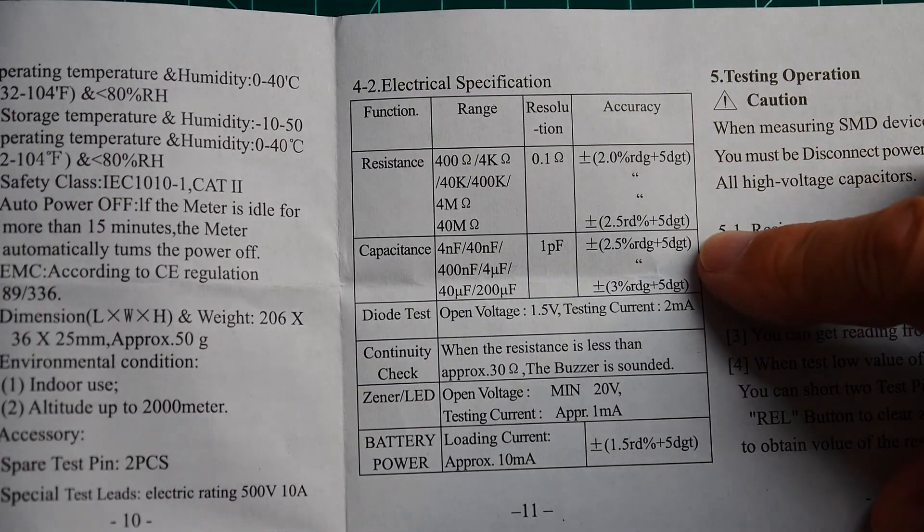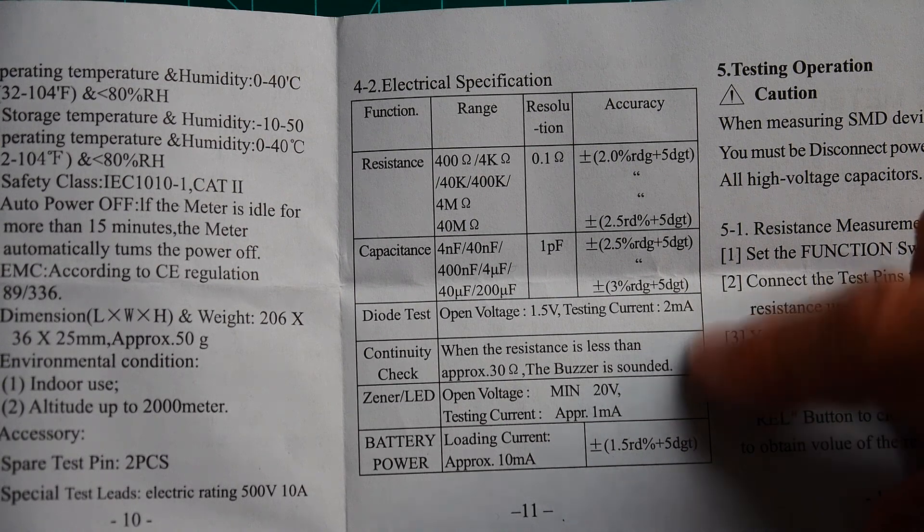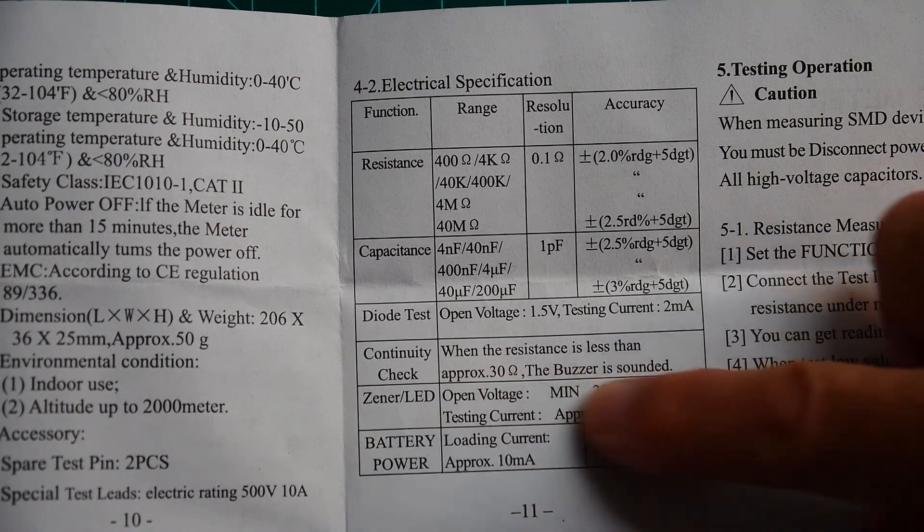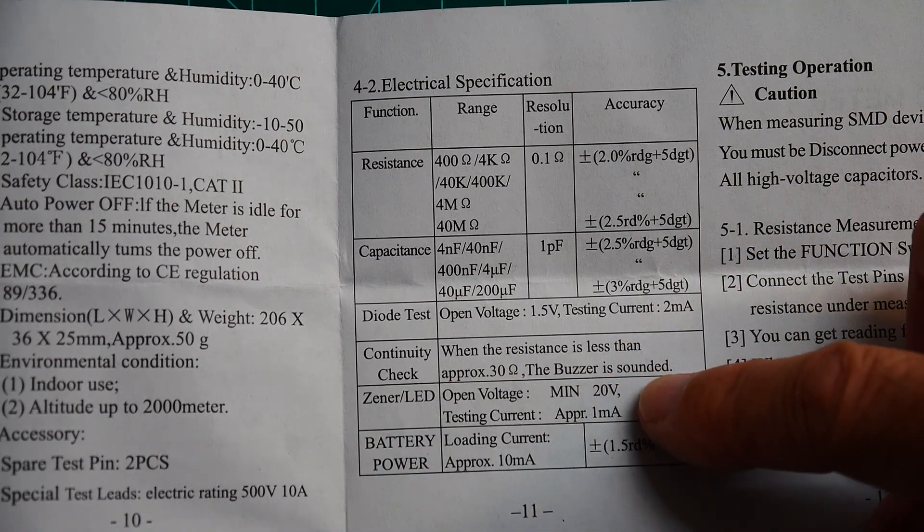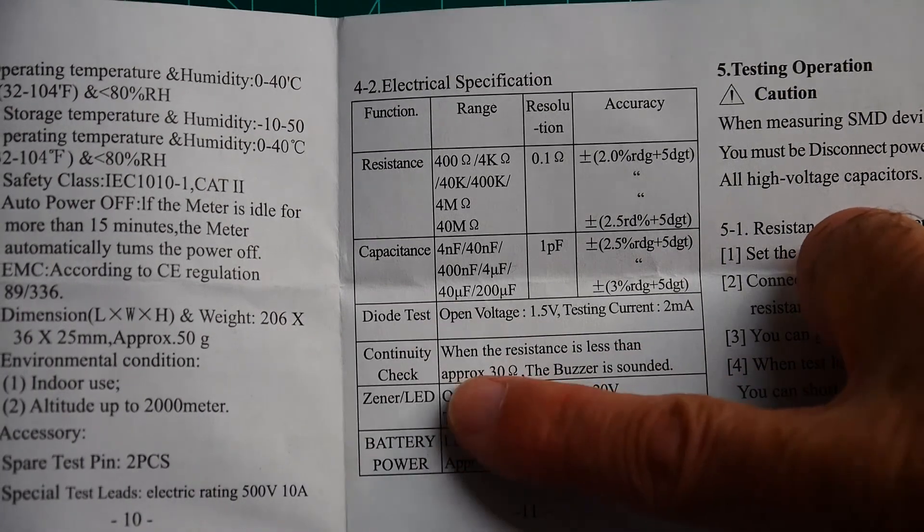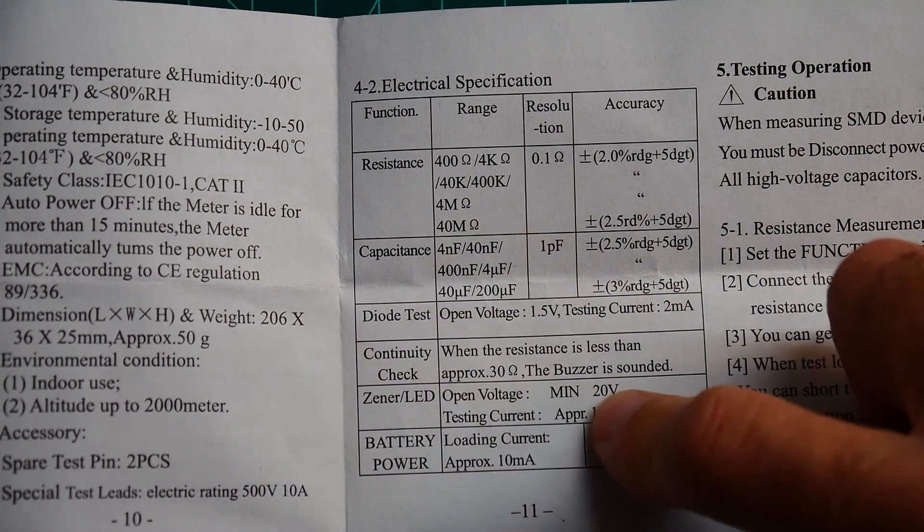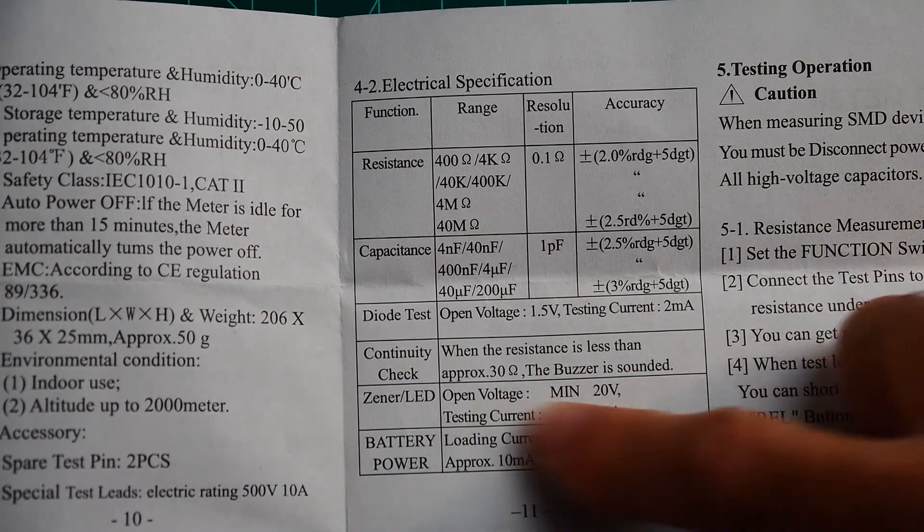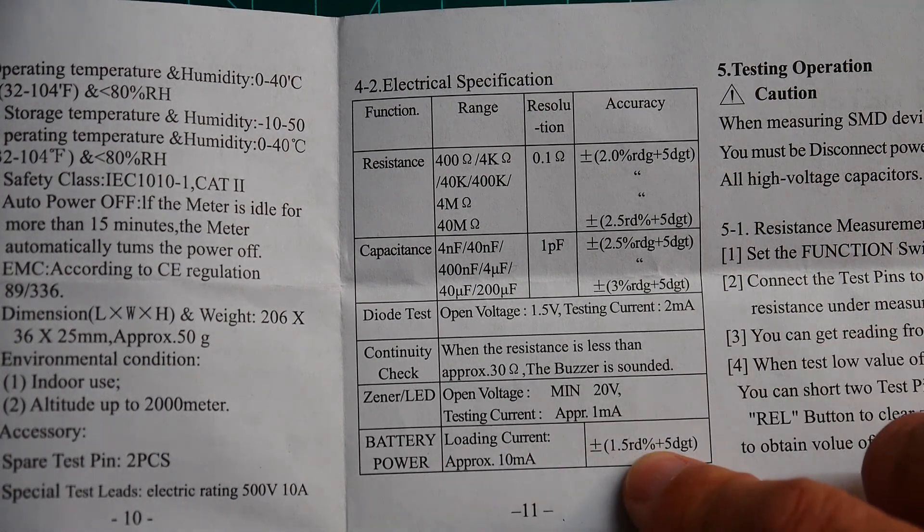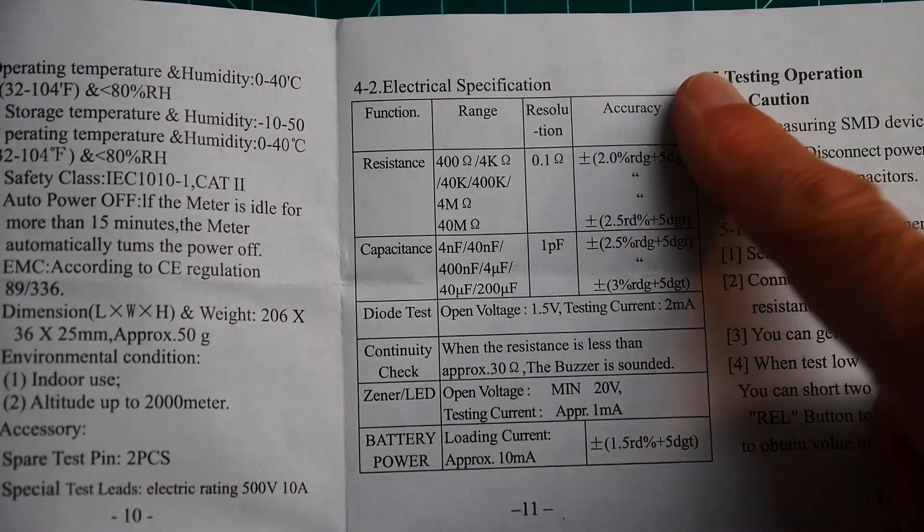It measures resistance. It measures capacitance. It measures diodes. It does continuity checking. It'll measure zener, which is kind of cool, up to 20 volts. And LEDs up to 20 volts. I'll have to try that out. That'd be cool. Because blue LEDs, gallium nitride LEDs can go up to 4 volts sometimes. But they're usually around 3 volts.